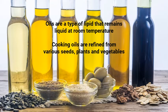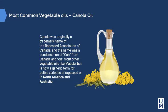Oils are a type of lipid that remains liquid at room temperature. Cooking oils are refined from various seeds, plants, and vegetables, so the term 'vegetable oil' is interchangeable — it could mean canola oil, safflower, sunflower, or any other oil produced from a vegetable. Canola was originally a trademark name of the Rapeseed Association of Canada — the name condensed from 'can' for Canada and 'ola' from vegetable oils like Mazola — but is now a generic term for edible rapeseed oil varieties in North America and Australia.